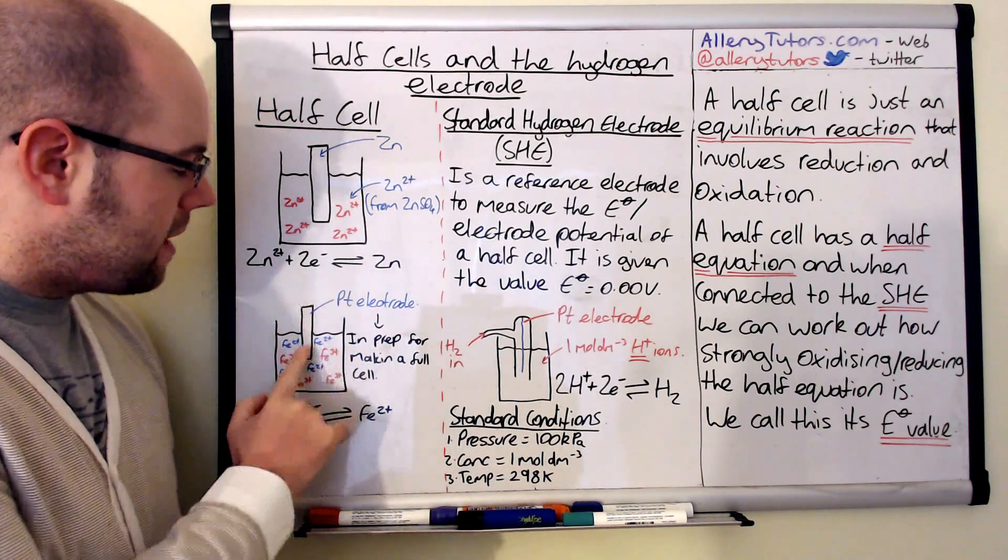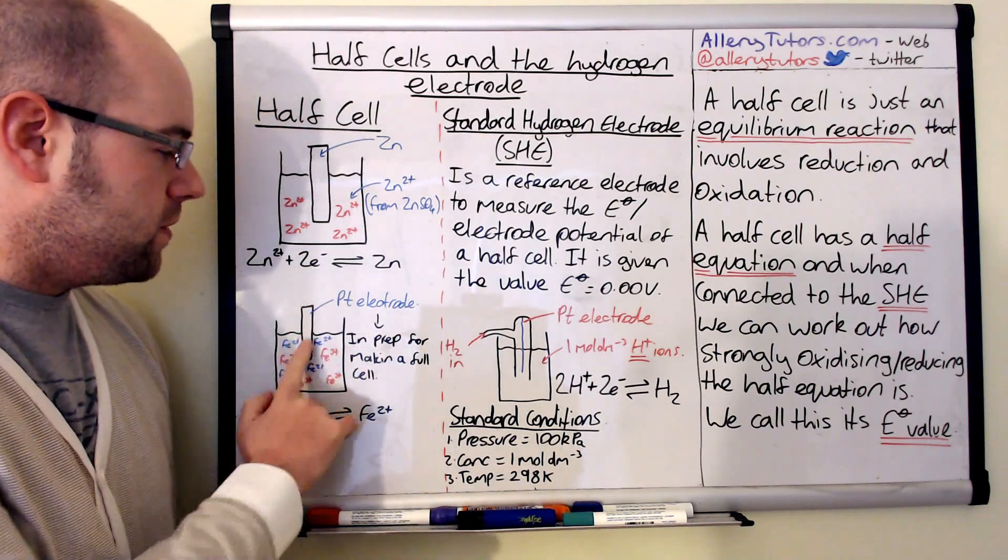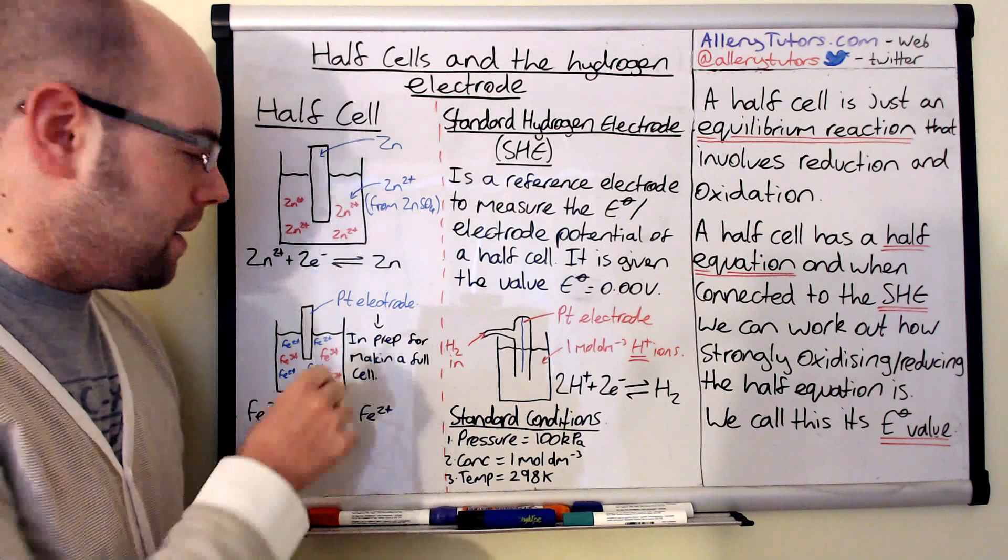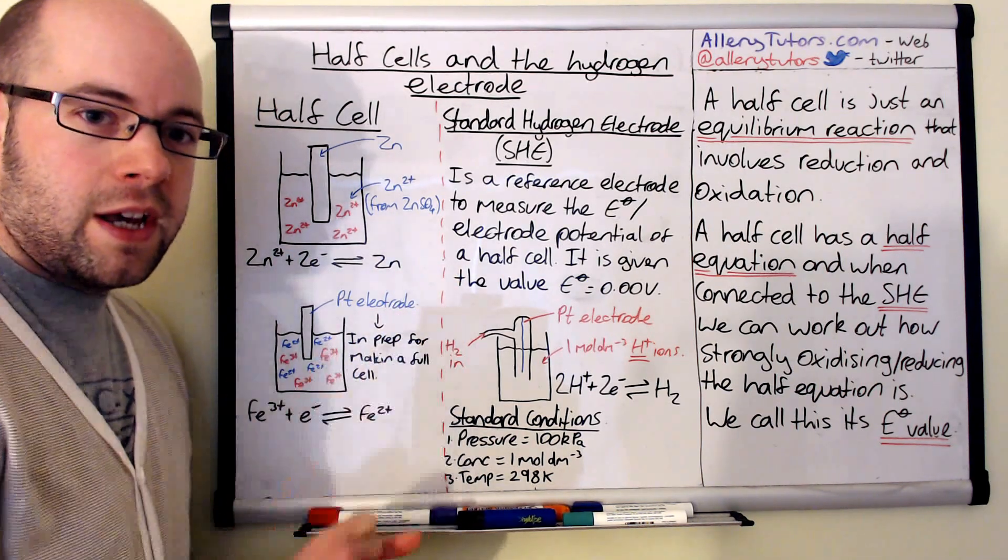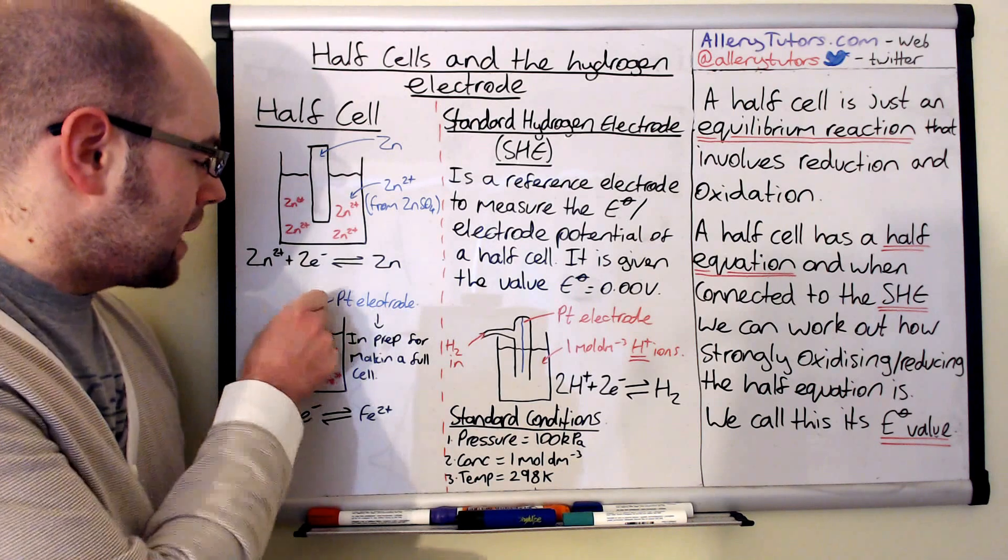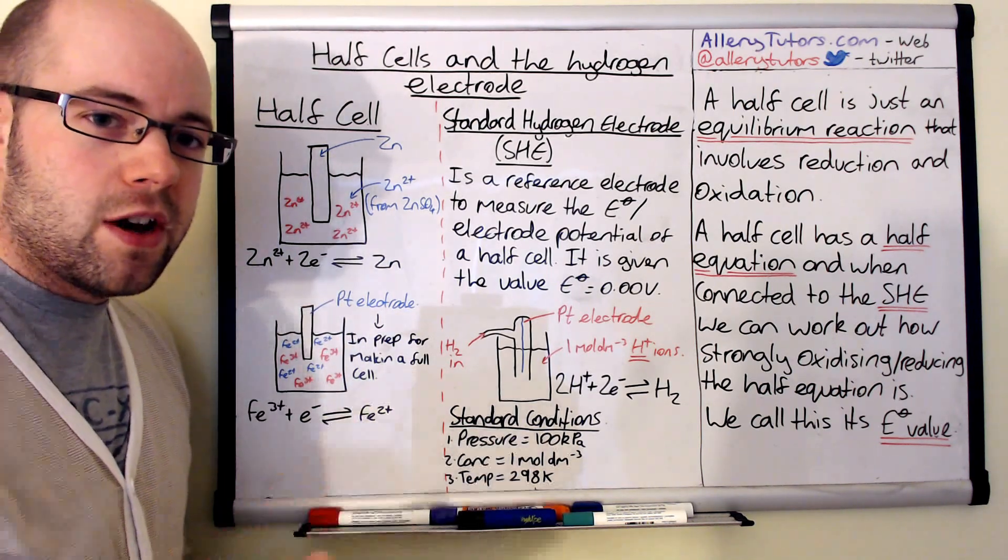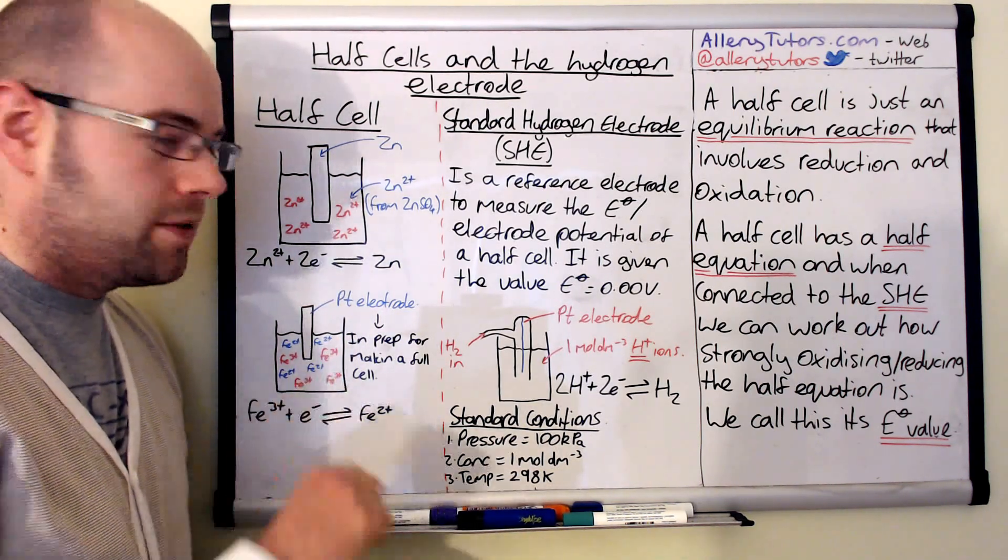We've put in here as well, because these are two solutions, we've used a platinum electrode. A platinum electrode can be used if we're going to connect it with another half cell.